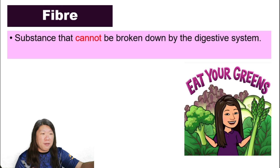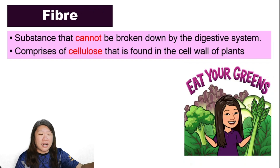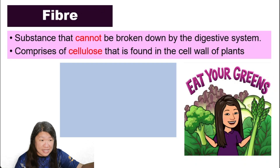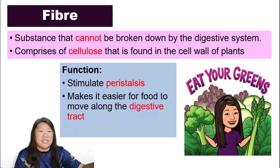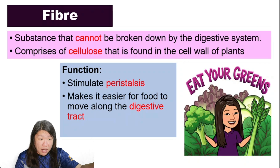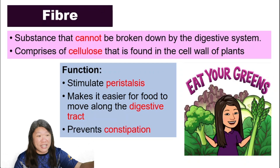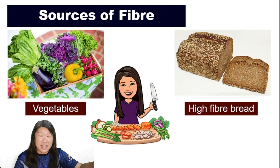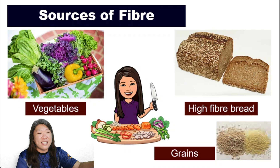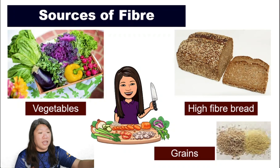What is fiber? Fiber is a substance that cannot be broken down by the digestive system — meaning we cannot digest it. It comprises cellulose found in the cell wall of plants. Even though we cannot digest it, fiber is very important. It stimulates peristalsis, making it easier for food to move in your digestive tract, and it prevents constipation. Sources of fiber include vegetables, fruits, high-fiber bread, and grains.